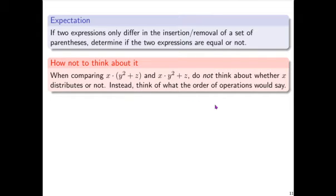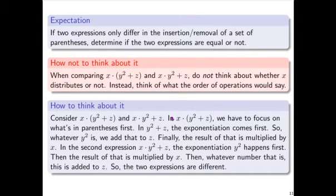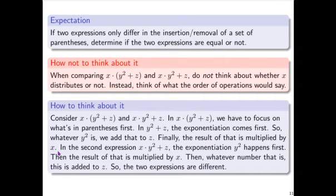What's more sustainable is to think about what the order of operations would say. Let's look at these two expressions. In x times (y squared plus z), we focus on what's in parentheses first: y squared happens first, then we add z to that, and finally that result is multiplied by x. The second expression, x times y squared plus z without parentheses: y squared happens first, then that result is multiplied by x, and then that result is added to z. So the two expressions are different.